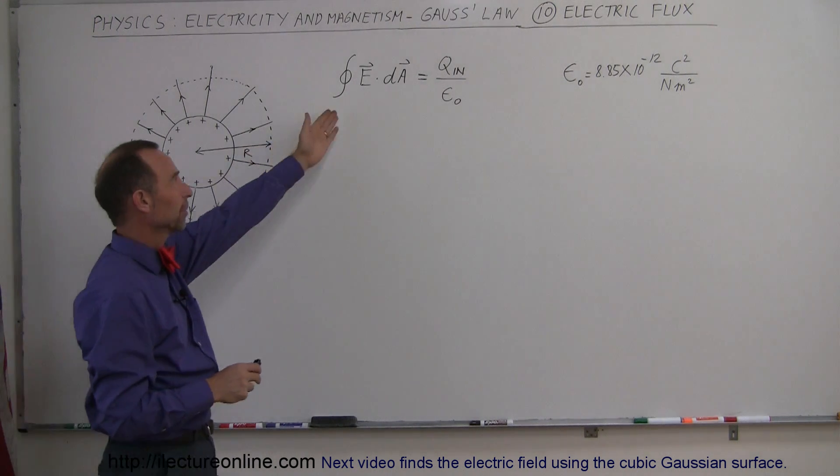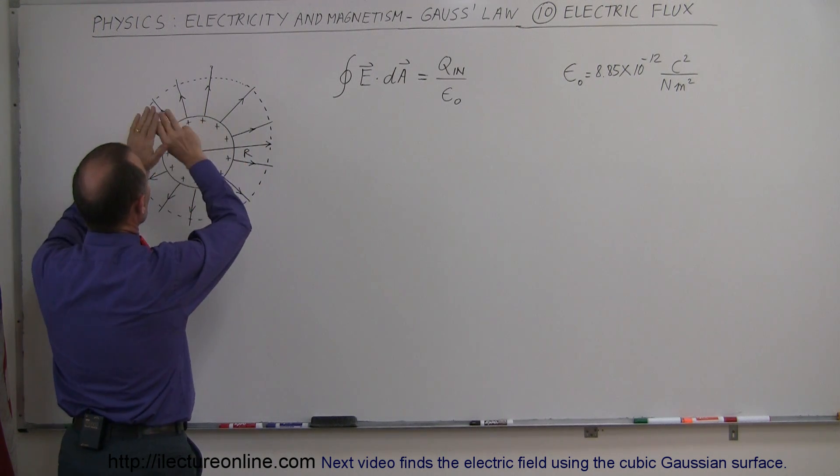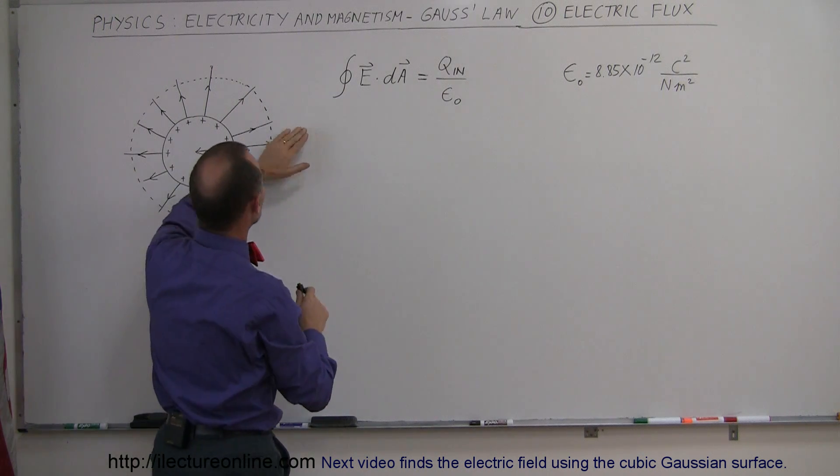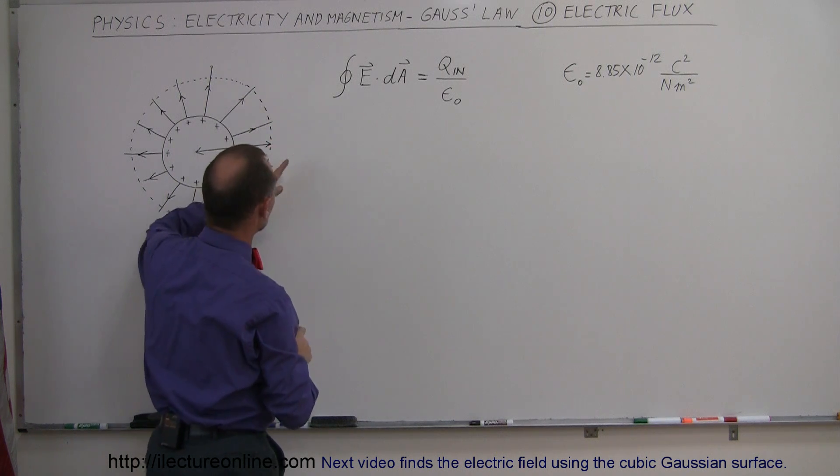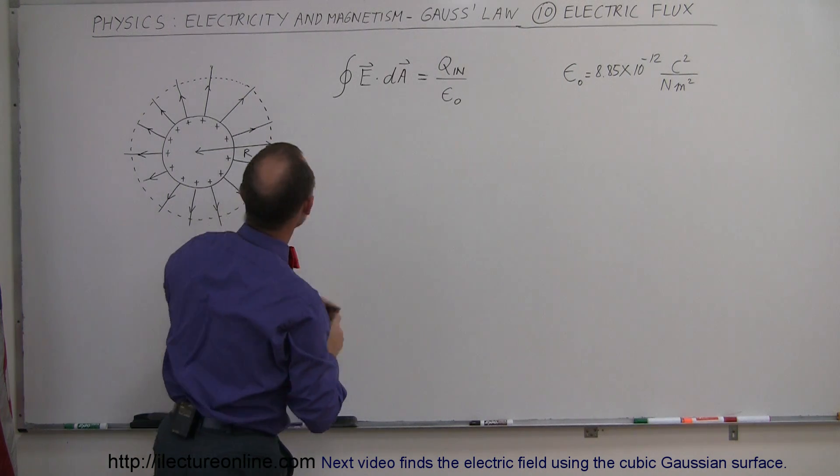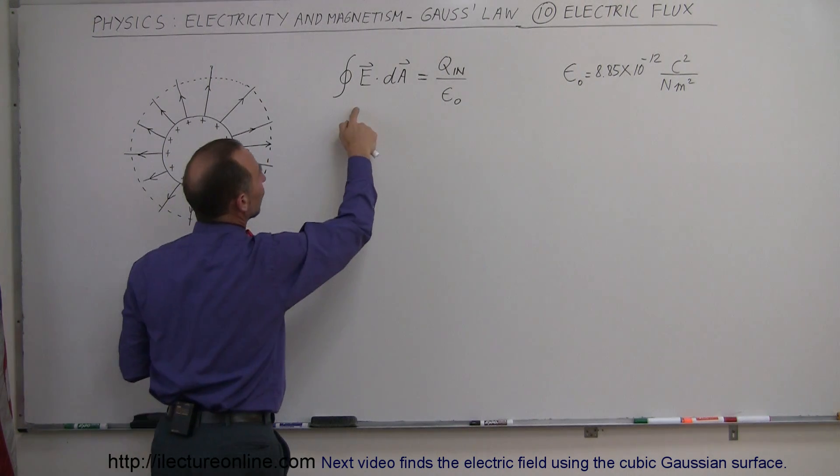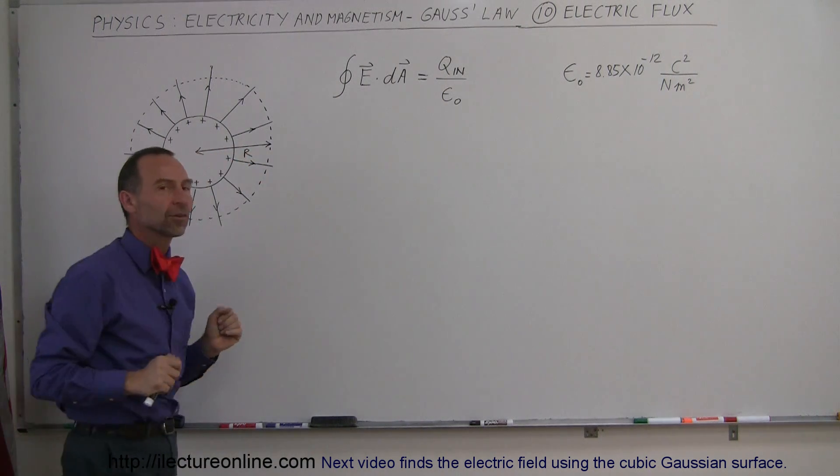Here we have the equation that represents Gauss's Law. If we have an object that has charge on it and we draw a Gaussian surface around it, we can say that the integral, the surface integral of the electric field strength, or the electric field at the surface, dotted with dA, which means dotted with the surface area, we take an integral over that, that is equal to the charge inside the Gaussian surface divided by epsilon naught.